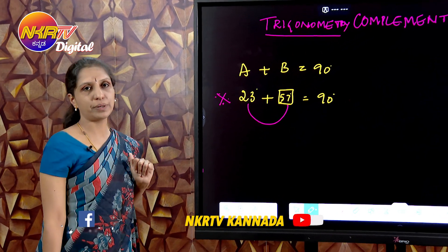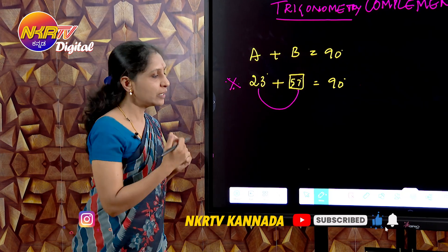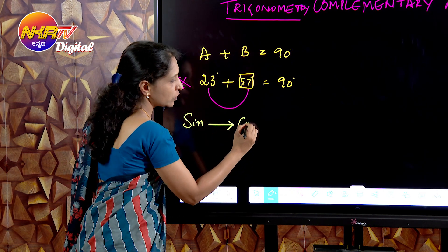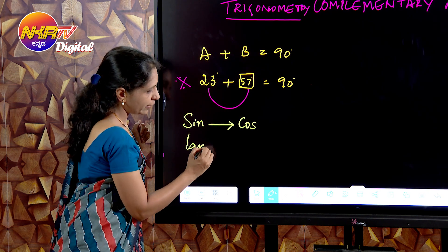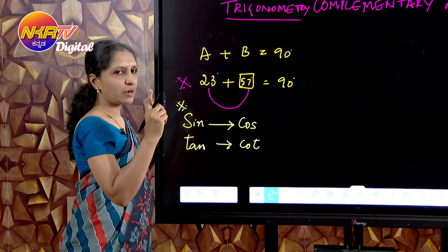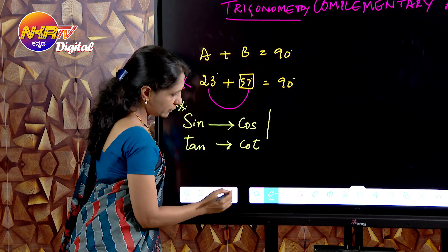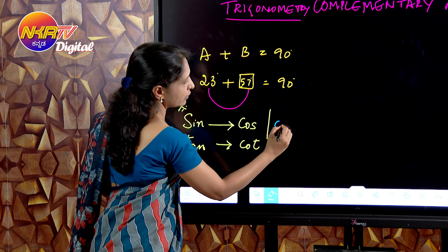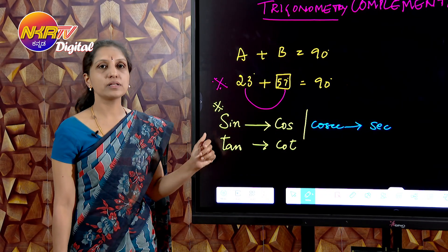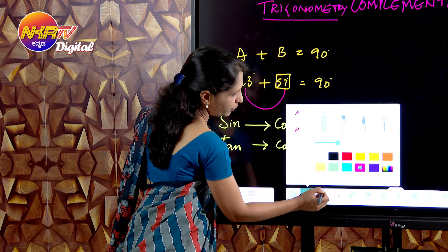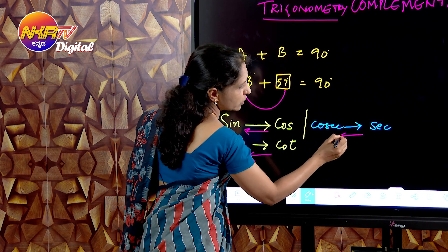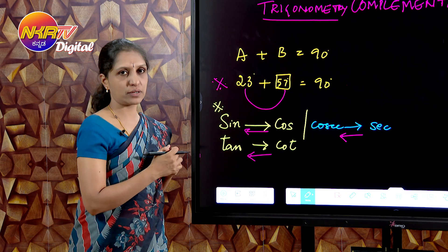Under trigonometry, you are going to have complementary angles. We know that sine is a trigonometric ratio paired with cos; for tan, we have cot; and these are the reciprocal ratios. So sine's complement gives cosecant, cosecant and secant are paired. If sine is there, its complement gives cos. If cos is there, sine comes. If tan is there, cot comes and vice versa. If cosecant is there, secant comes, and if secant is there, cosecant comes.